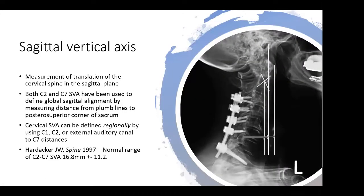The next commonly used parameter is the sagittal vertical axis. This can be measured in combination with the thoracolumbar spine or in isolation — it's essentially the measurement of the translation of the cervical spine in the sagittal plane. Most commonly, when we're talking about cervical deformity, we're talking about a positive sagittal vertical axis, meaning that the head is forward in comparison to the body, but in theory it can be the other way as well. Both C2 and C7 sagittal vertical axis have been used to define global sagittal alignment, measuring the translational distance between those vertebrae and the posterior superior corner of the sacrum.